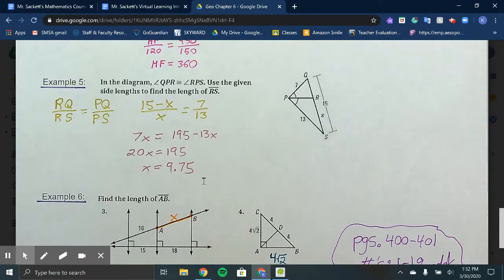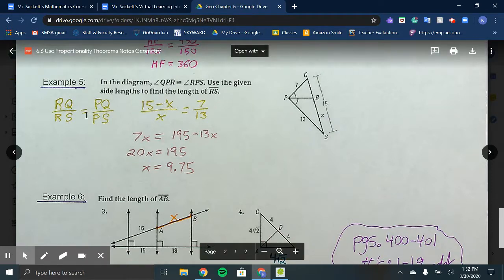Example 5 states in the diagram, angle QPR is congruent to angle RPS. Use the given side lengths to find the length of RS. We could state the proportion RQ over RS equals PQ over PS.